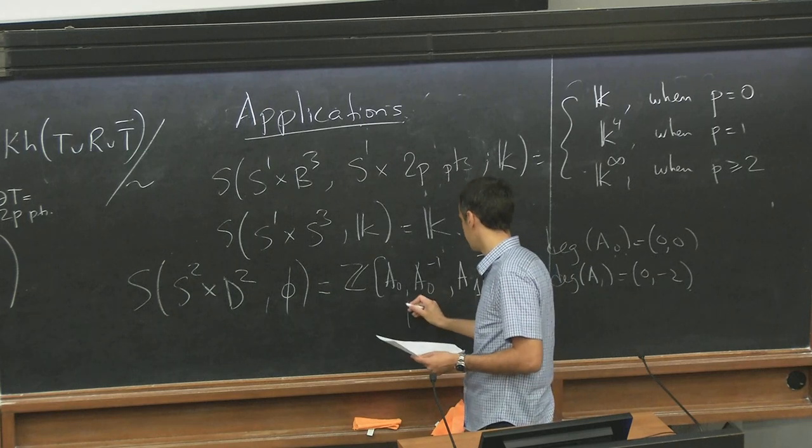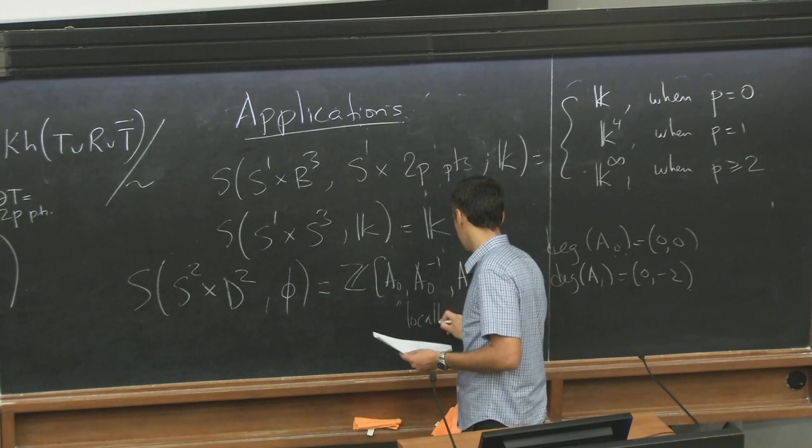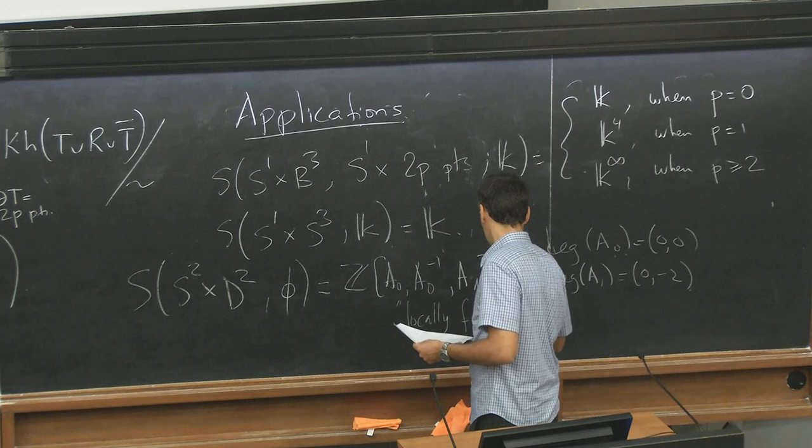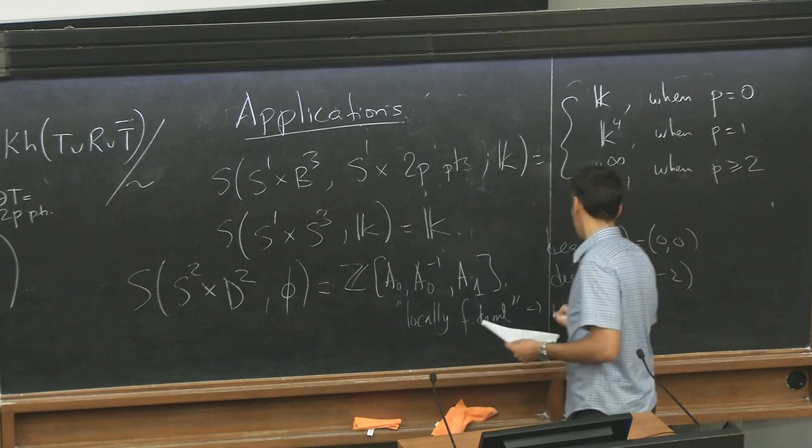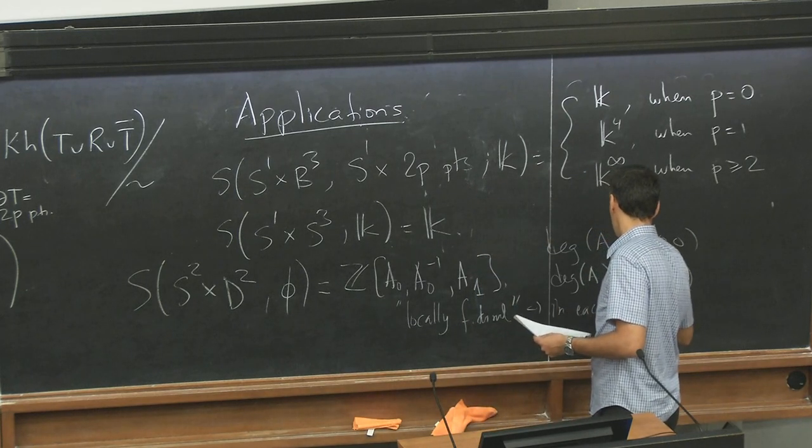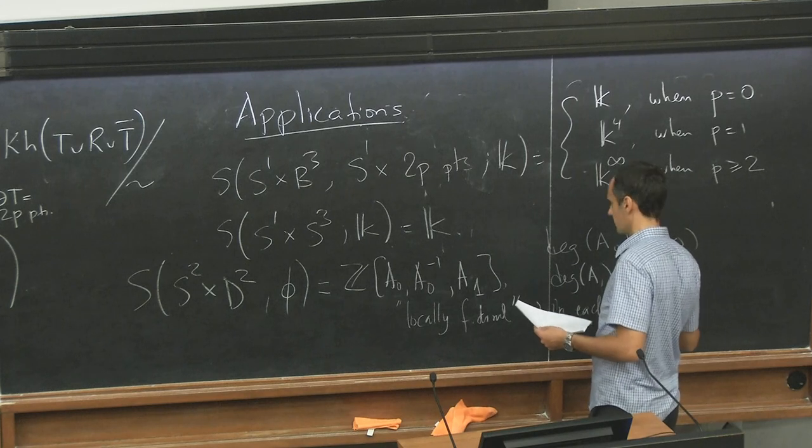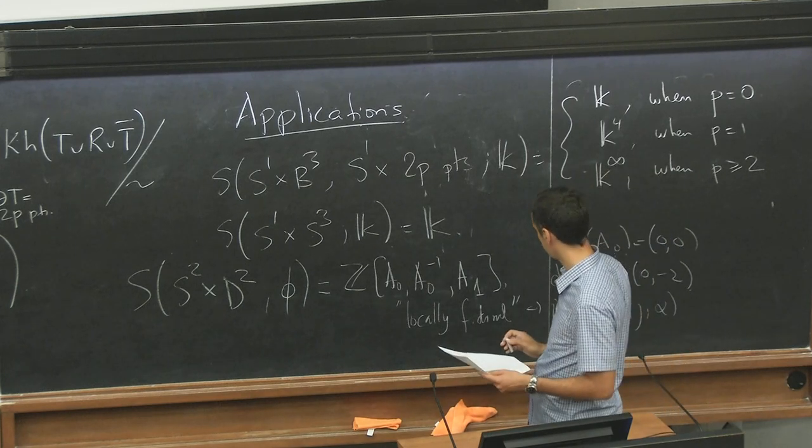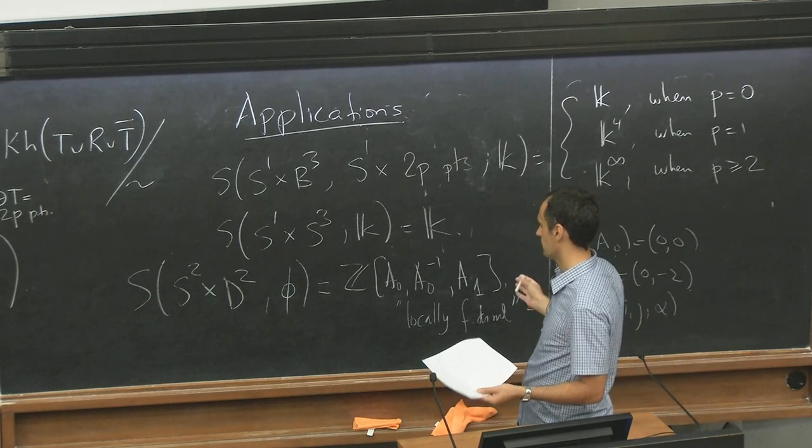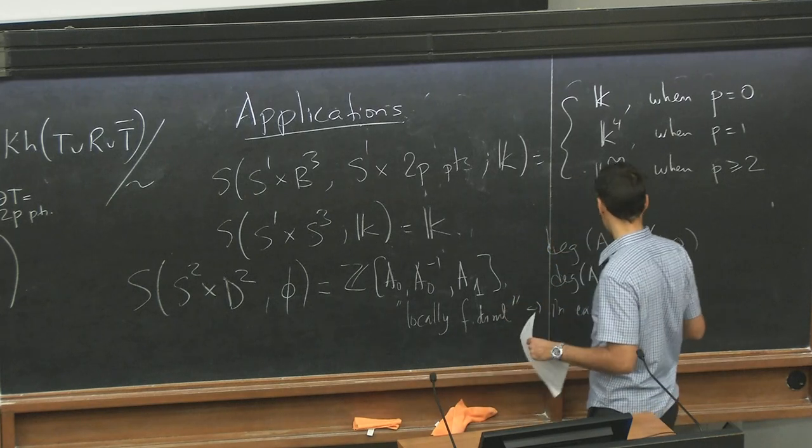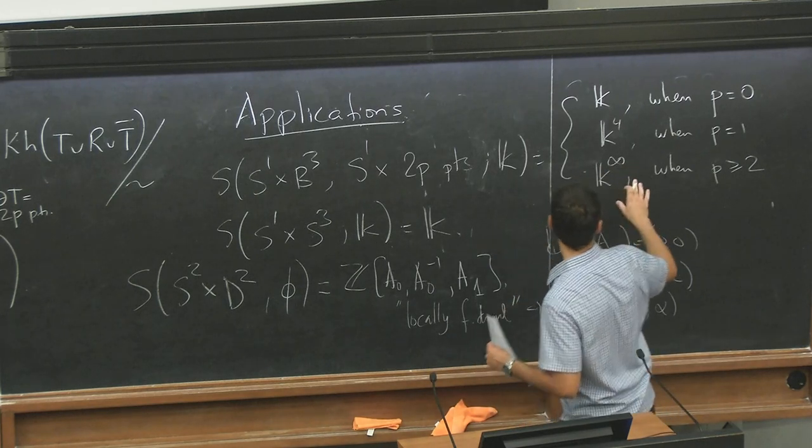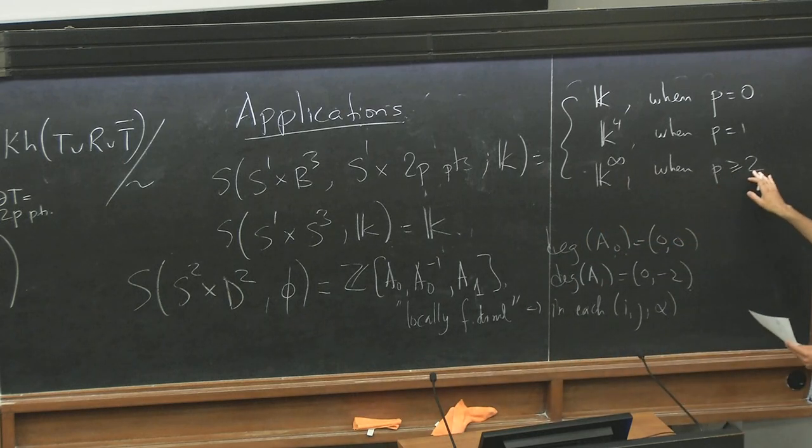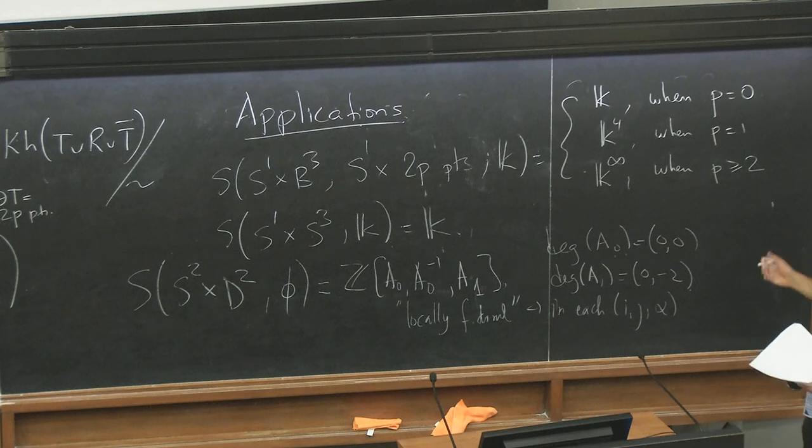This is also infinite dimensional, but it's, but, I mean, it's, like, locally finite dimensional. Meaning in each i, j, alpha. So recall that this decomposes according to i, j, alpha. And, okay, in this case, once you specify these things, it's finite dimensional. This is kind of bad that we got k infinity here. This is not locally finite dimensional.